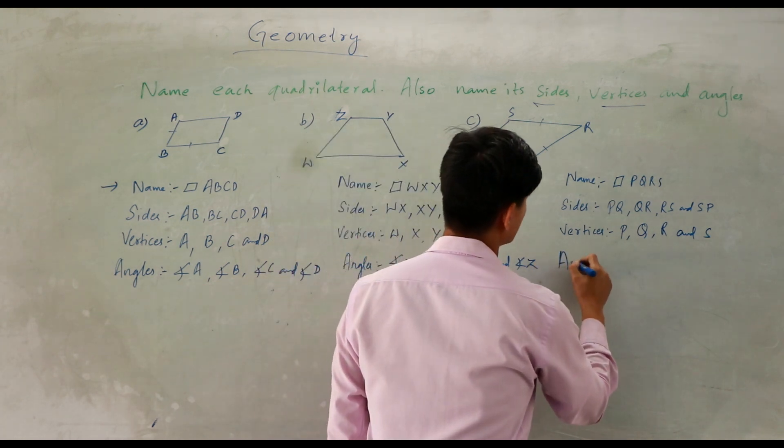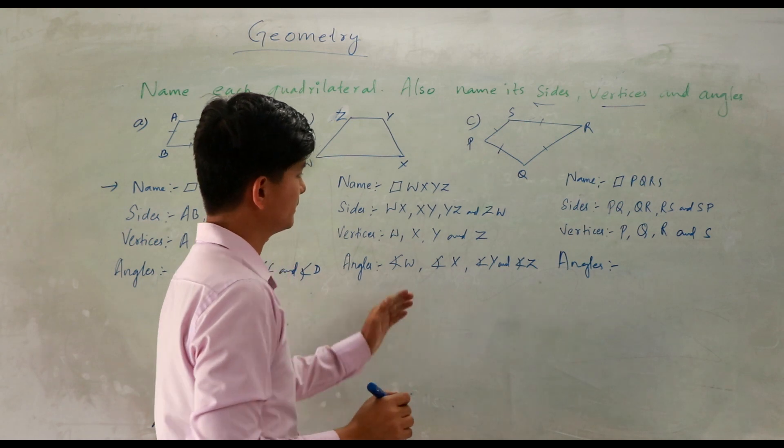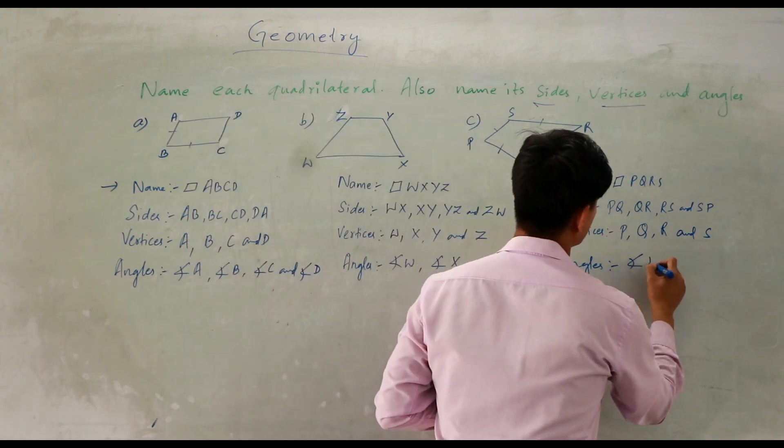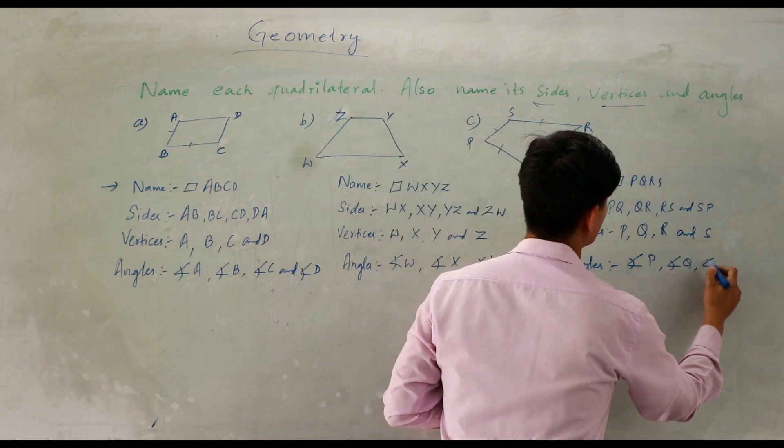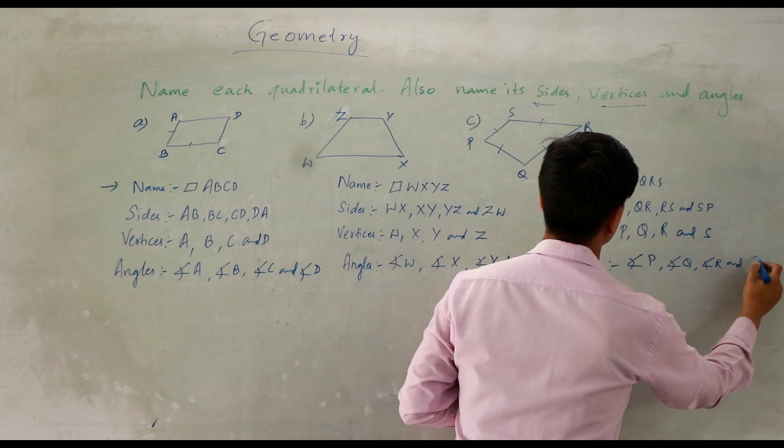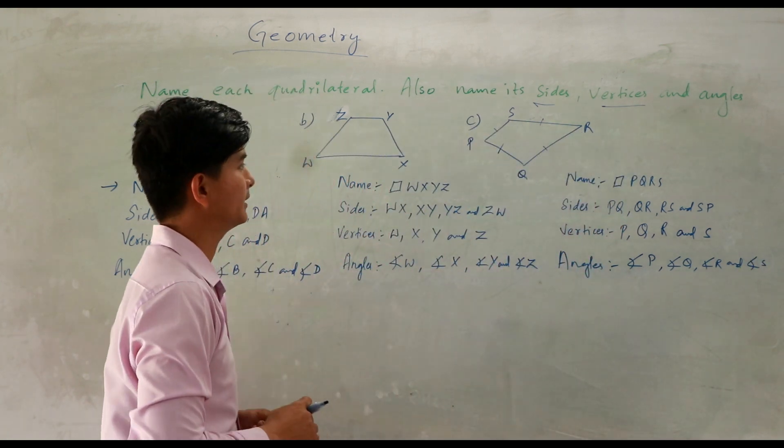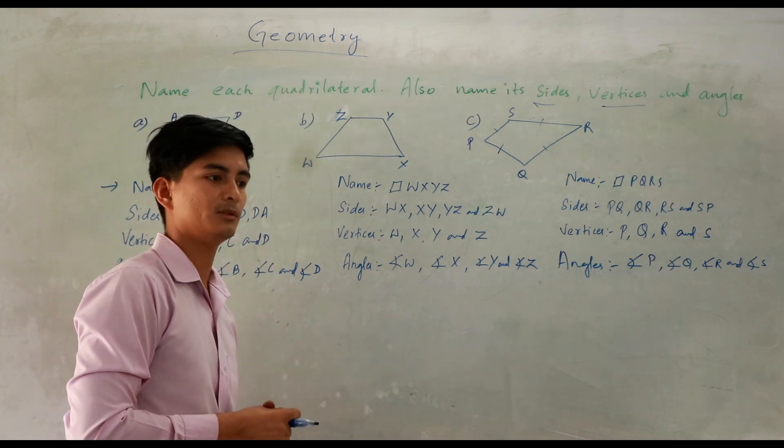Now angles: angle W, angle X, angle Y, and angle Z. So like this you can find out the sides, vertices, angles, and name also.